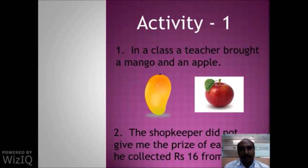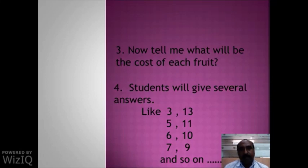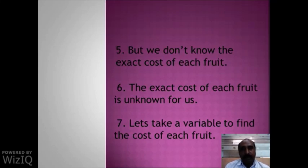The teacher said the shopkeeper did not give the price of each fruit separately, but collected Rs. 16 from him. The teacher asked students to tell the cost of each fruit. Students gave several answers — some said Rs. 3 for mango and Rs. 13 for apple. Many pairs of costs were suggested: 5 and 11, 6 and 10, 7 and 9, and so on. But all of these may not be correct, because we don't know the exact cost of each fruit.